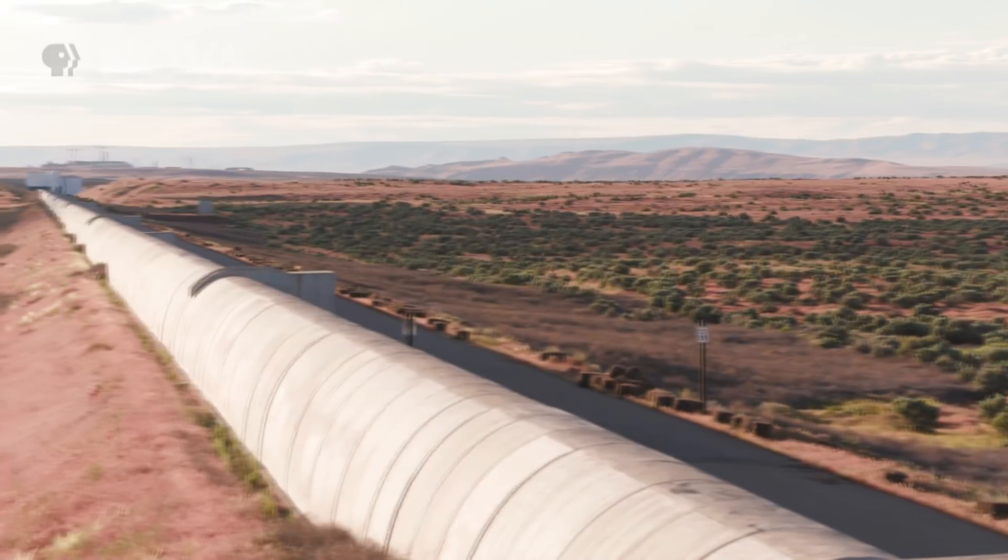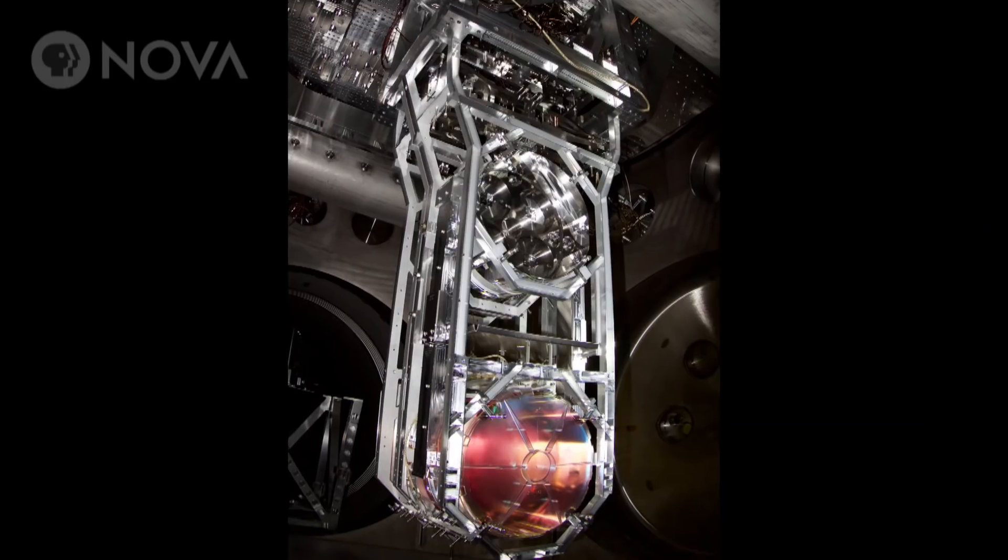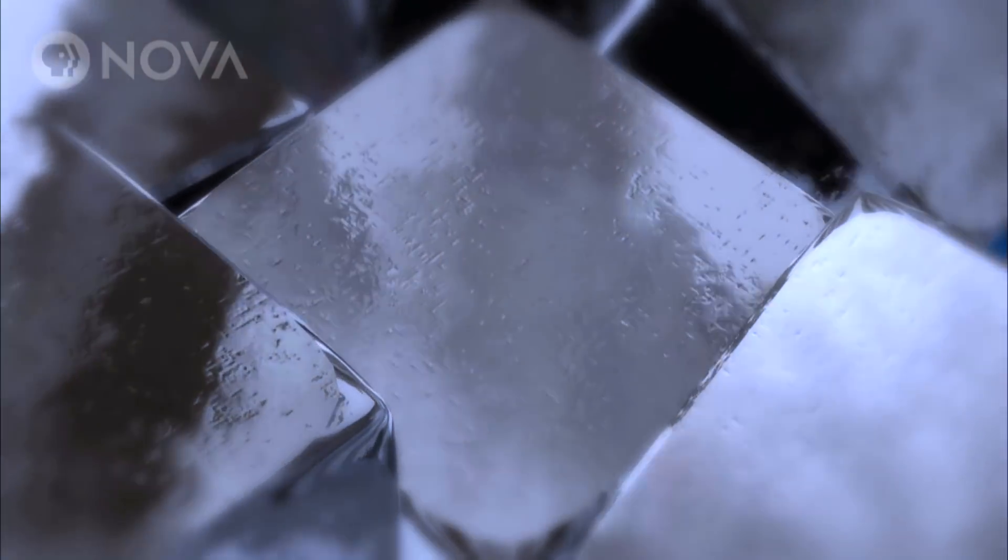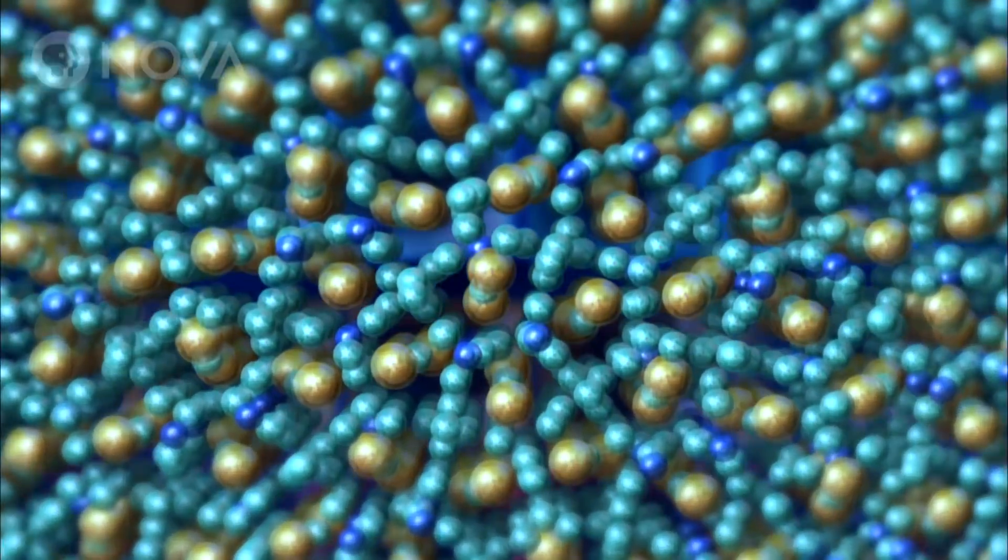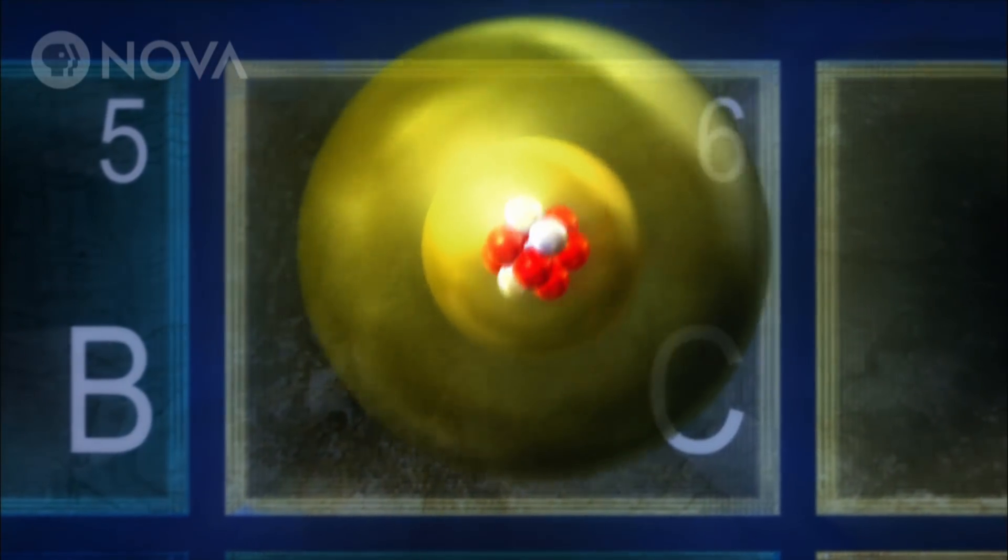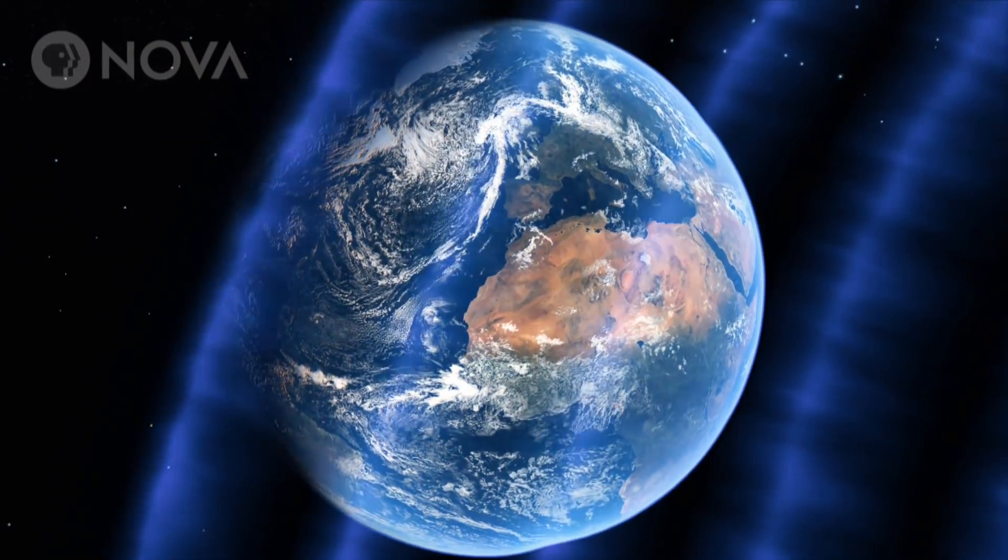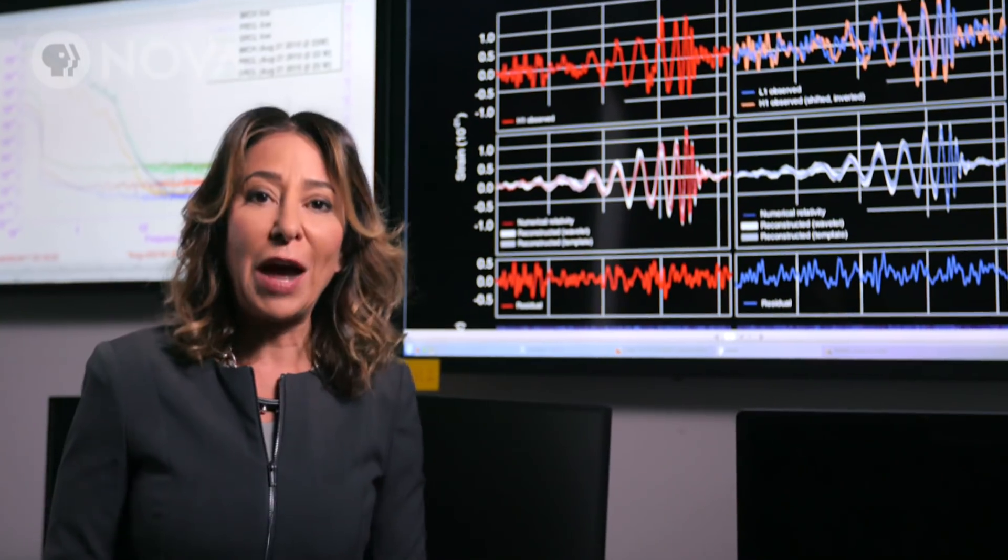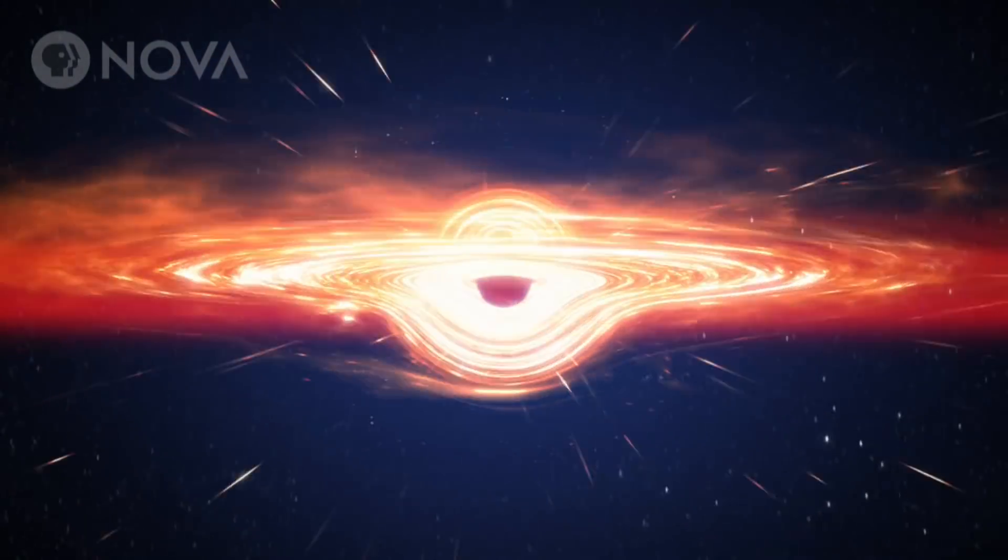Inside these tubes, lasers must monitor impossibly tiny distances. You are monitoring the motion of mirrors back and forth by such minute amounts. 10,000 times smaller than the nucleus of an atom. The data reveals a warp in time and space. That wave is new and direct evidence of the existence of black holes.